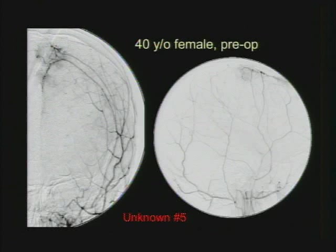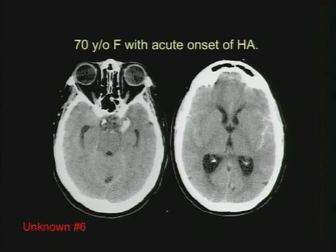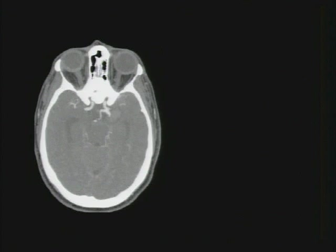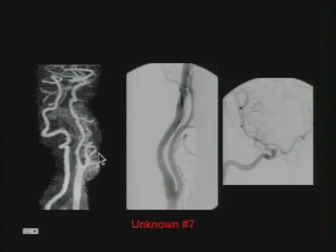Here's a 40-year-old female pre-op. What vessel is being injected? What procedure do you think is being done? This is a 70-year-old female with acute onset of headache. What are the key findings and what study do you want to do next? Here's that patient's CTA and conventional angiogram. This is the seventh unknown case — two different patients with the same diagnosis: one patient with the MRI and the second patient with the conventional angiogram.